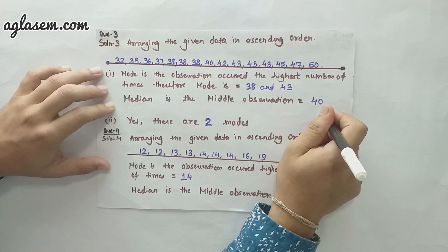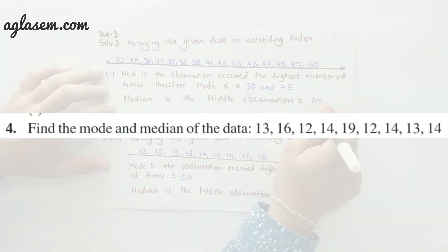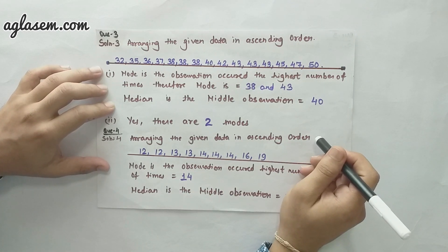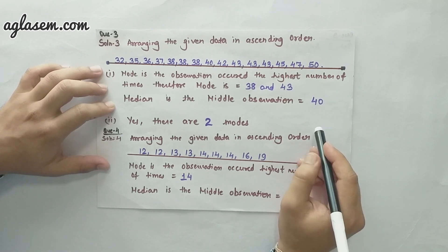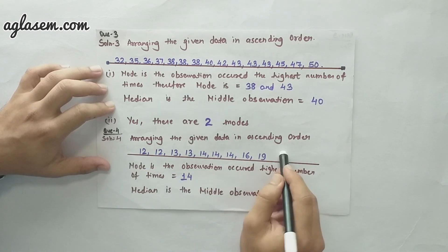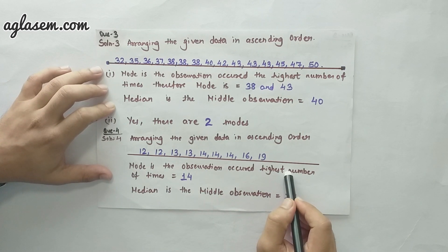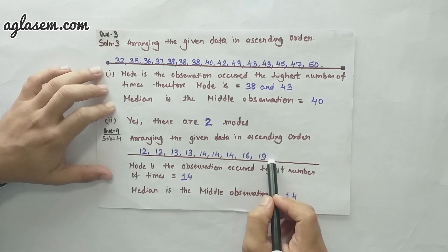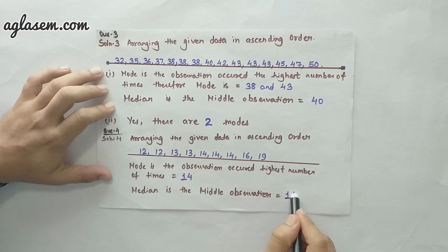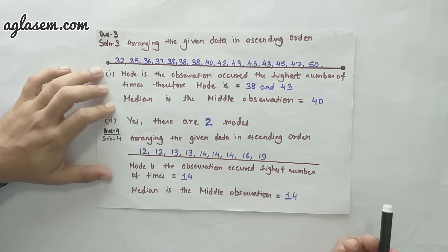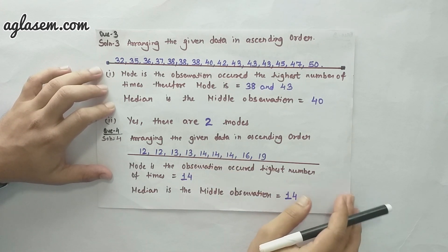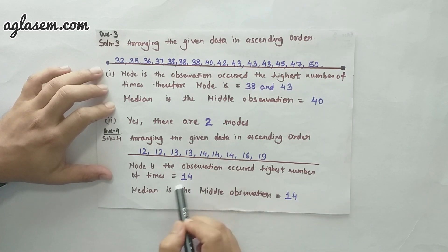Moving forward to the fourth question: find the mode and the median of the data. You can see the data on the screen — I have arranged it in ascending order, as it makes solving easier. The mode of this question is 14 because 14 is the number repeated three times in the data series. Moving forward to the median: the median is the middle observation of the data series, and 14 is the middle point. So the mode and median are the same in this question.